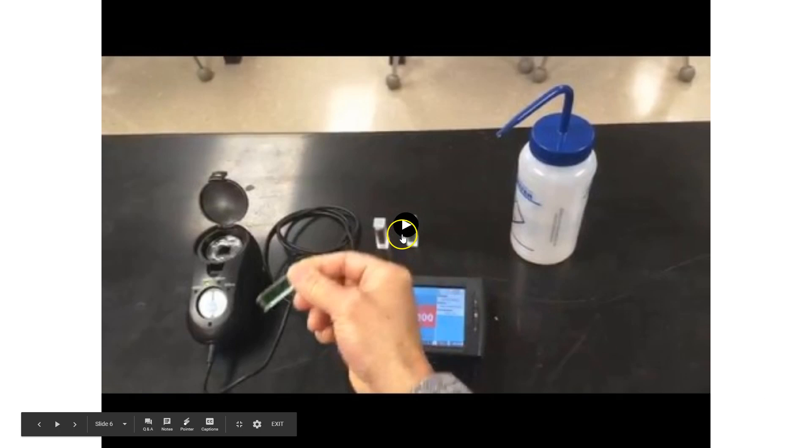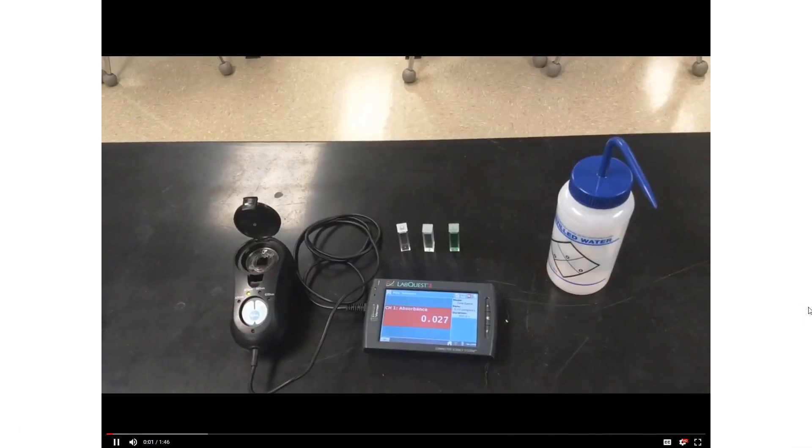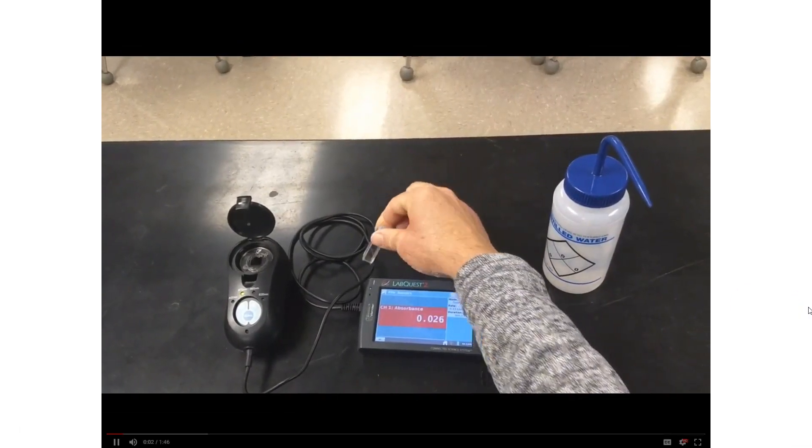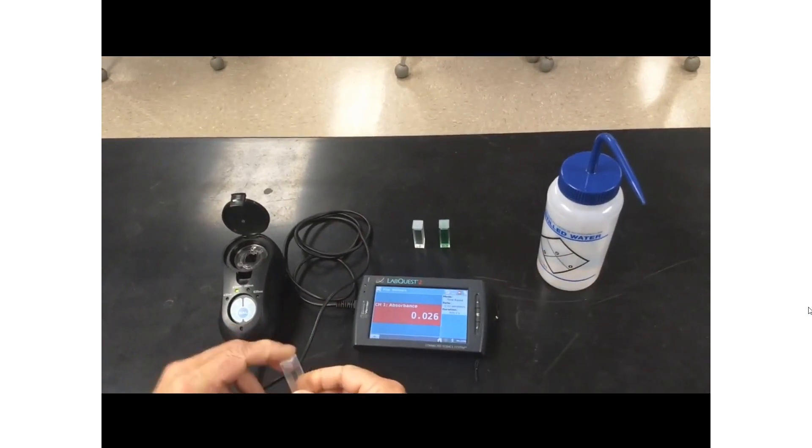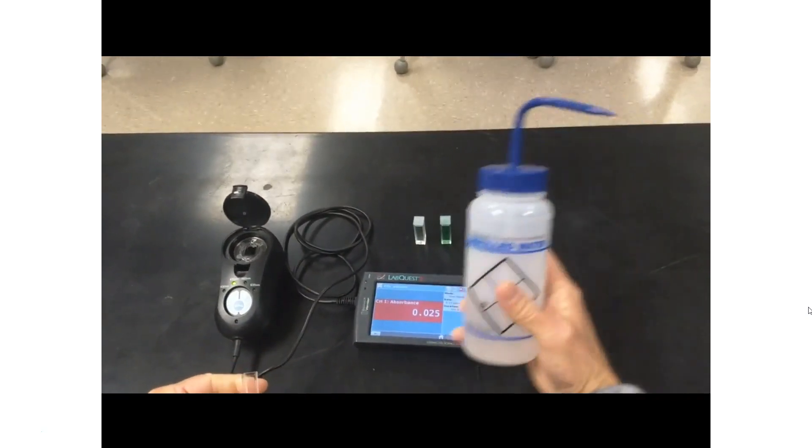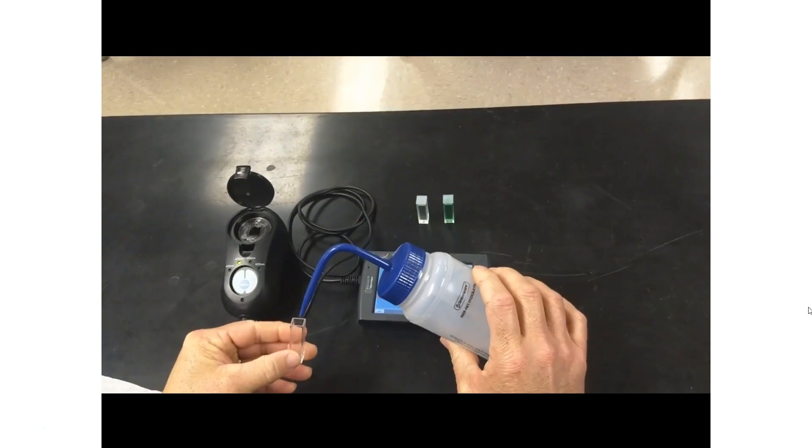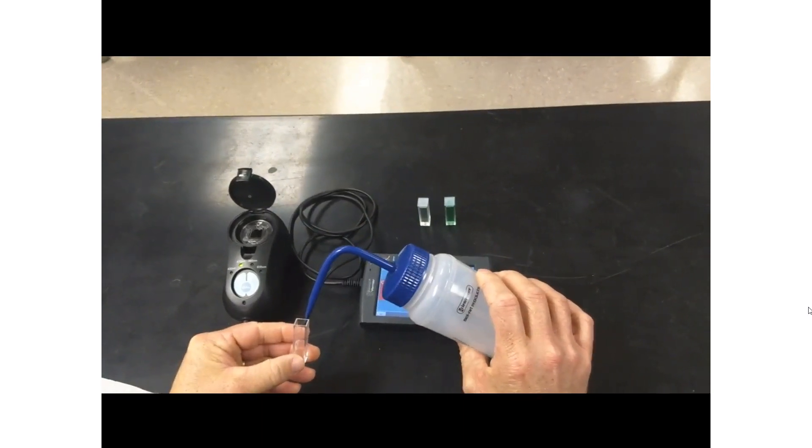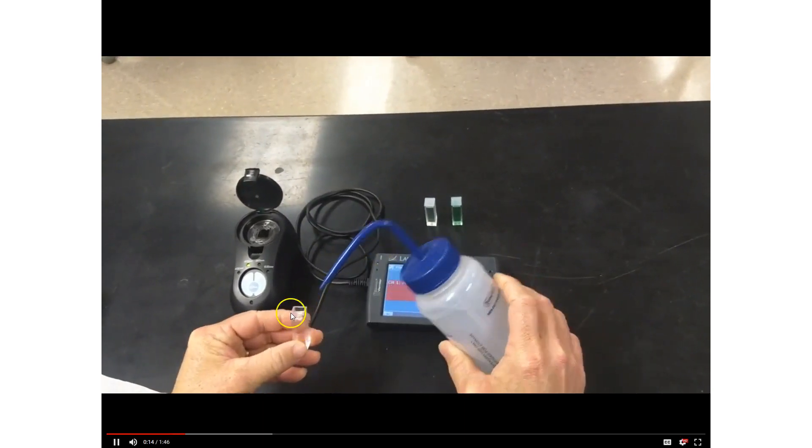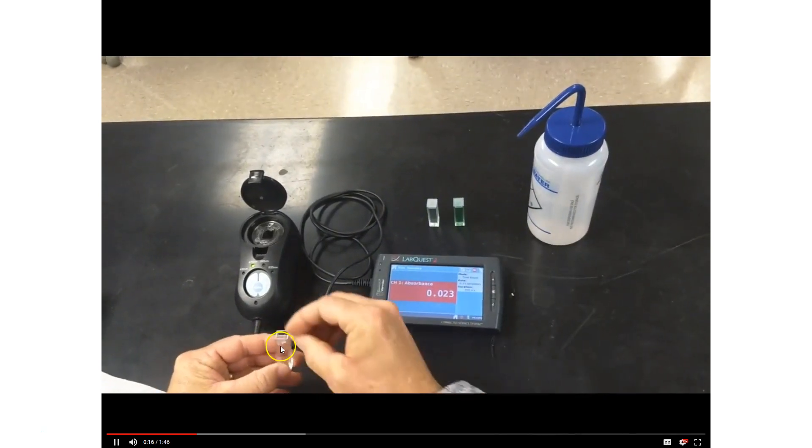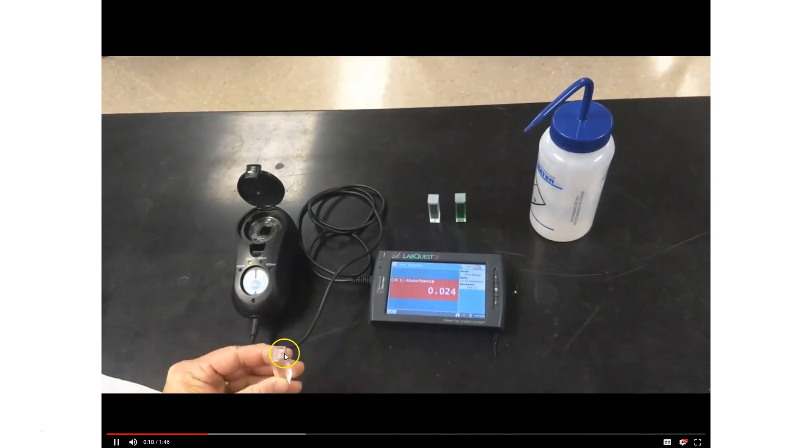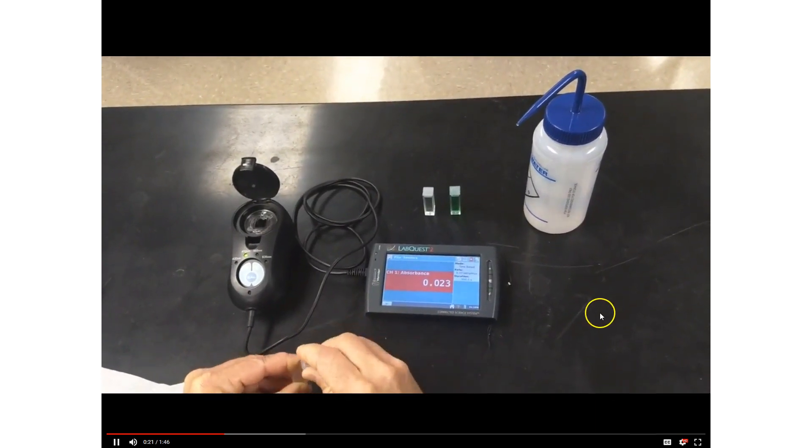Here's a quick video on how we use the colorimeter in class. First, make sure the device is reading accurately. Obtain the cuvette and fill it with distilled water. When you look at the cuvettes, you'll notice one side is clear, or two sides are clear, and two sides are beveled, so they don't allow light to pass through well.